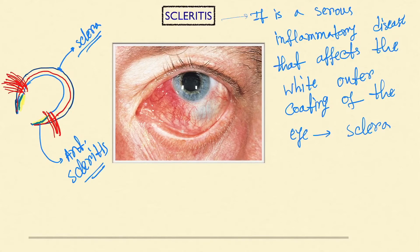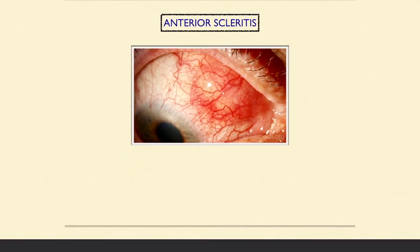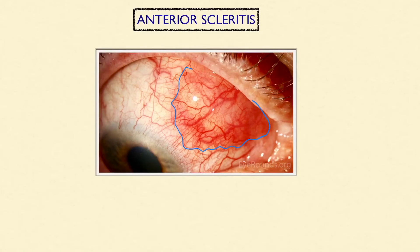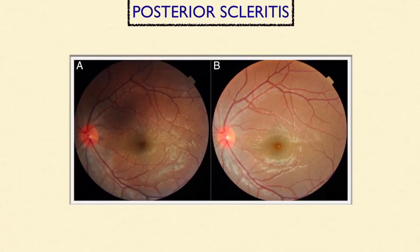If inflammation is occurring posterior to the insertion of the recti muscles, this is called posterior scleritis. In this image you can see anterior scleritis — inflammation has occurred in the front side of the eye. In this other image you can see posterior scleritis, that is posterior to the extraocular muscles.